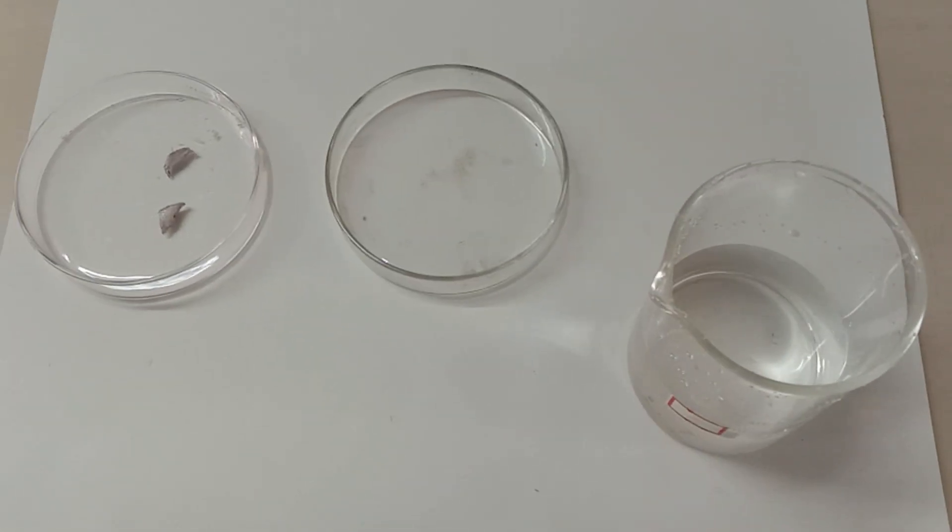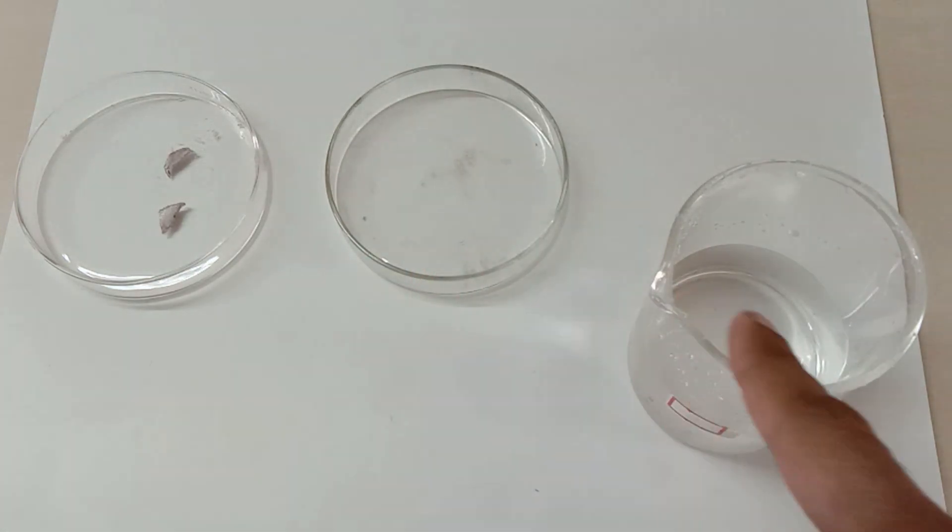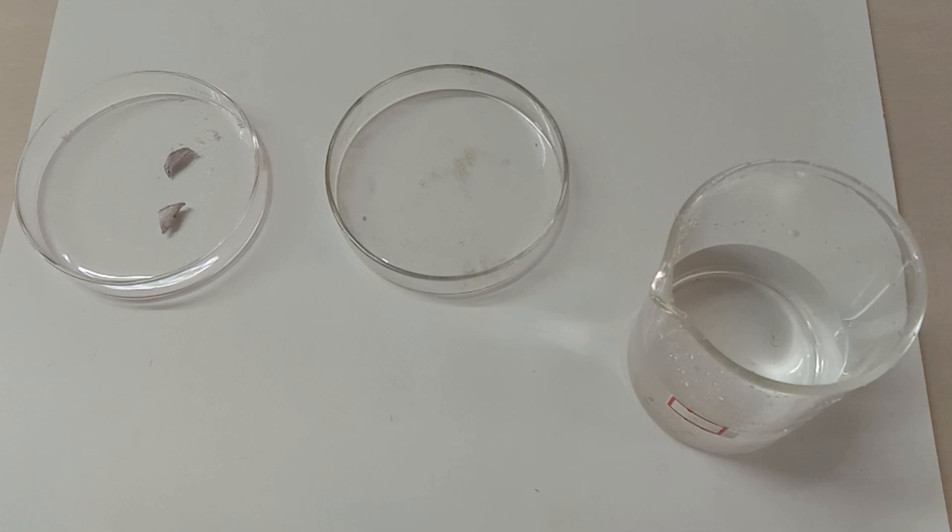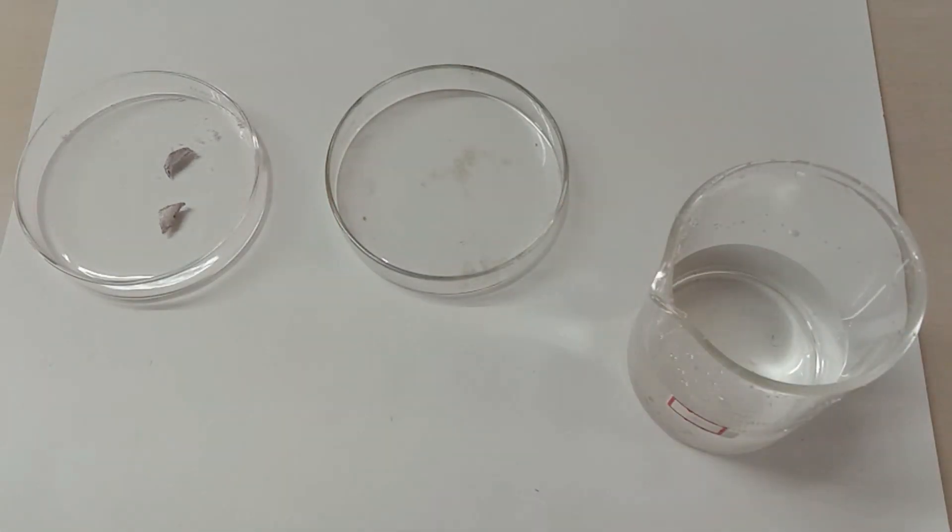Now I am going to demonstrate the chemical properties of sodium. The first one is reaction of sodium with water. I have taken some water in a petri dish, and I am going to add a small piece of sodium in it. We would also be requiring red litmus paper, as when sodium reacts with water it forms base, and bases turn red litmus paper blue.